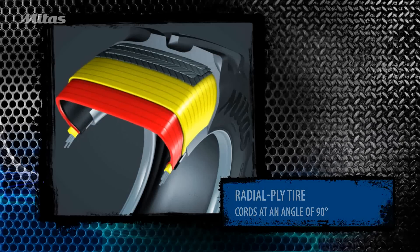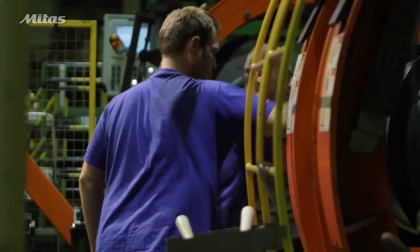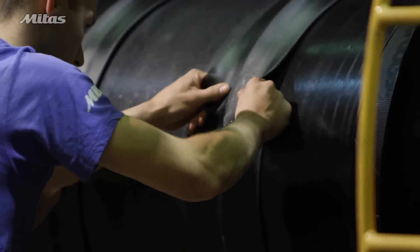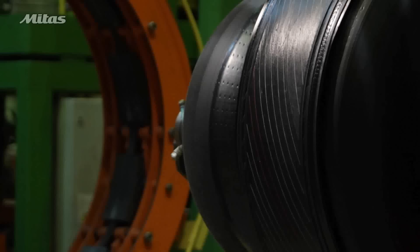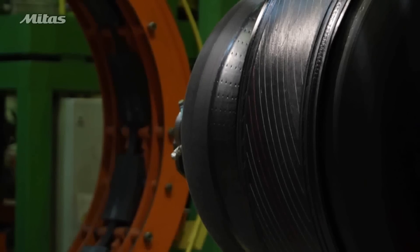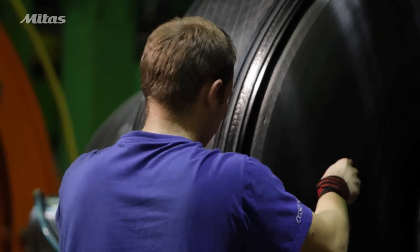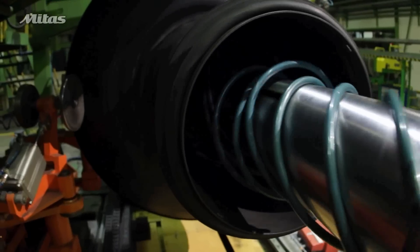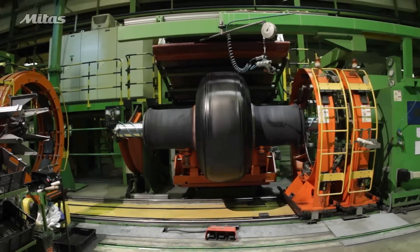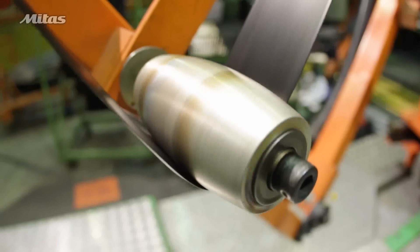Radial ply tires are more complicated to produce, but they have notable characteristics. For example, radial ply tires save fuel, last longer, and improve riding comfort. Agricultural radial tires apply less pressure on the soil and thus protect plant roots.